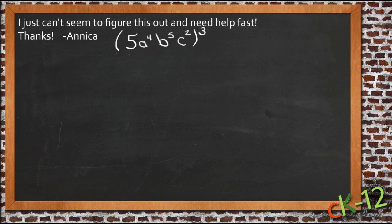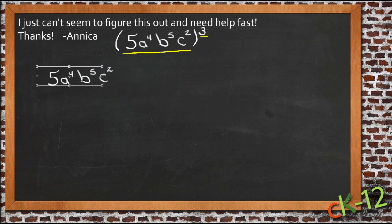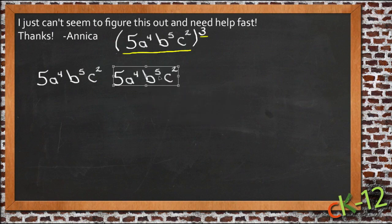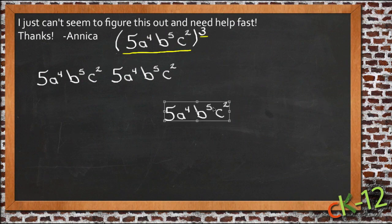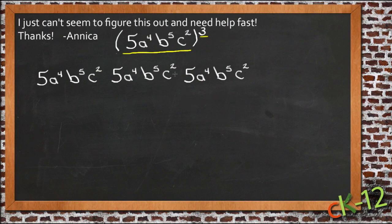So Annika, this is kind of like we were just describing there. What's going on is we have this whole group of numbers right here that serves as the base, and then three is your power. So you really have 5a to the fourth b to the fifth c squared, that whole thing times itself three times. So we're going to multiply it out by itself all three times. And we'll just use the commutative law to group things together so it's easier to do the actual multiplication.